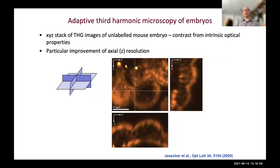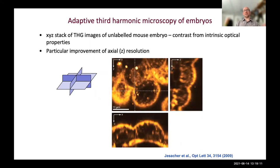We applied this further to other types of microscope - a multi-photon nonlinear microscope with third harmonic generation instead of fluorescence, again in mouse embryos, where we showed we could get considerably improved resolution using adaptive optics to correct for specimen-induced aberrations.